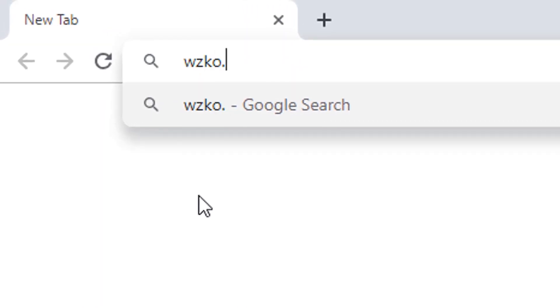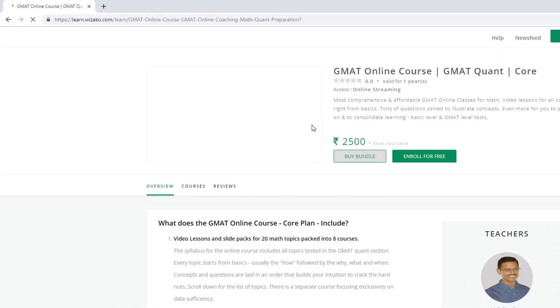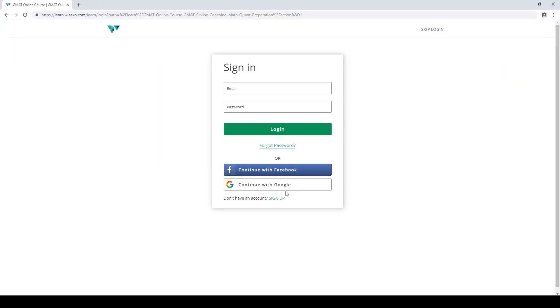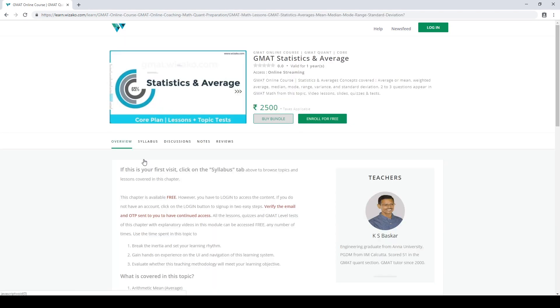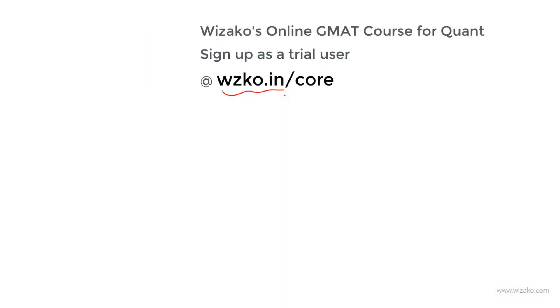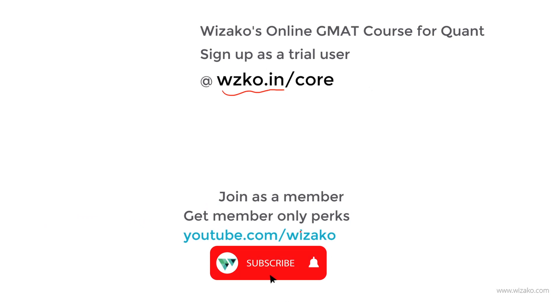Before you leave, two things. Sign up as a trial user at wzko.in/core. One of the most comprehensive online GMAT courses. Get started with a free topic, statistics and averages. Build momentum to your GMAT preparation. Subsequently, pay up and unlock the remaining topics. Lastly, subscribe to the channel youtube.com/wizako and spread the word among your friends who are preparing for GMAT. You may also choose to join this channel as a member for a small monthly fee and enjoy member-only perks that come with it and will help you boost your GMAT preparation.